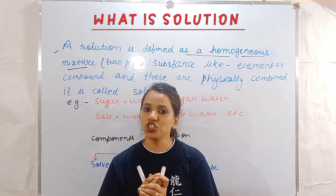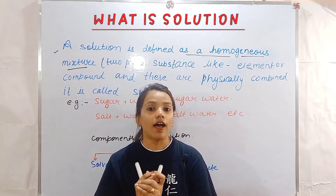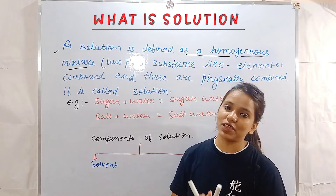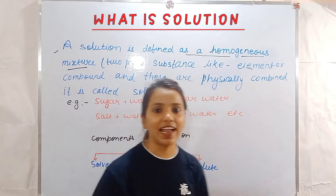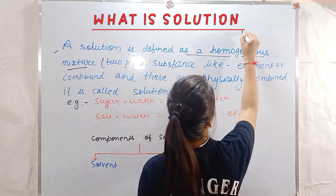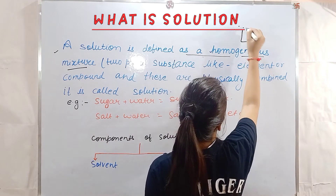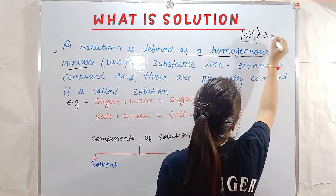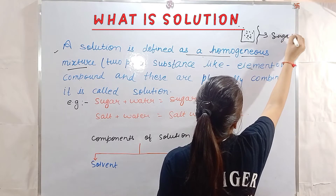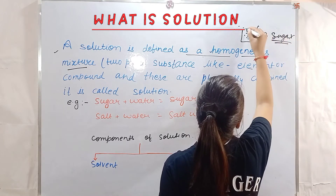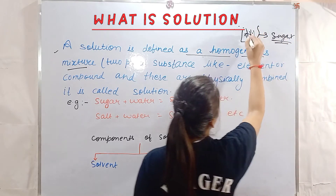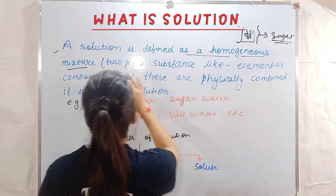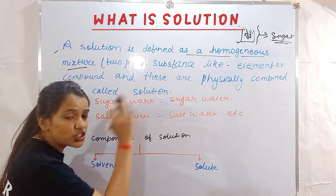If you want to see what a homogeneous mixture actually is, I have already made videos on that — you can check our playlist and description. When you take a glass of water and add sugar, this gives you a sugar-water solution. The sugar dissolves evenly, and we call this a homogeneous mixture. So a solution is a homogeneous mixture.